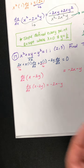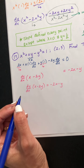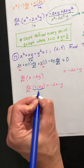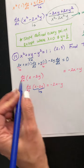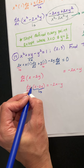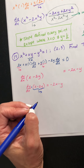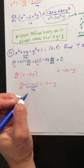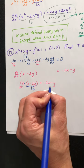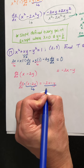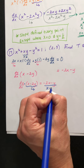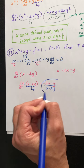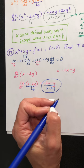Now I've got to isolate the dy dx, which means dividing since it's being multiplied. So we divide by x minus 2y, and now we have the slope formula with a point to plug in.